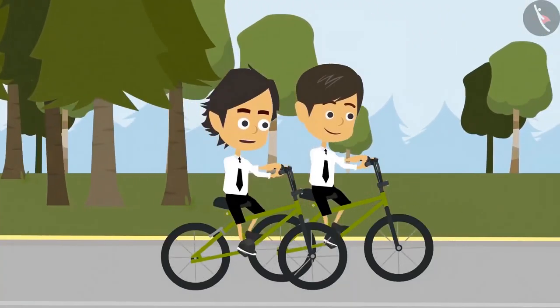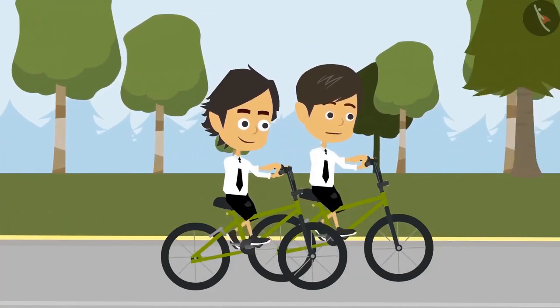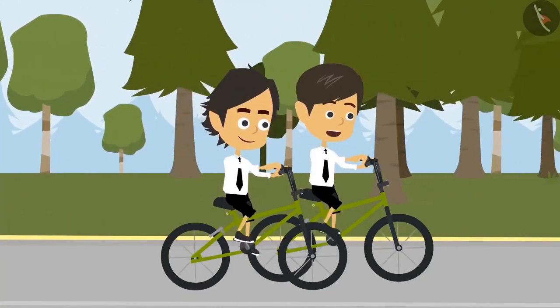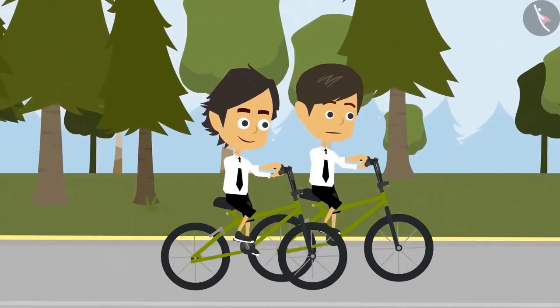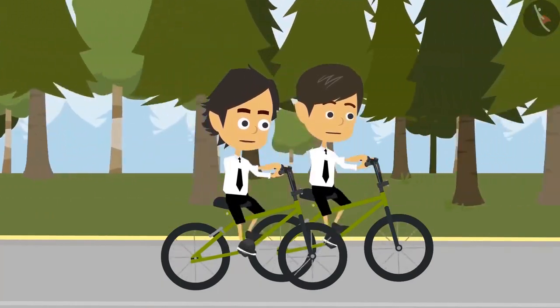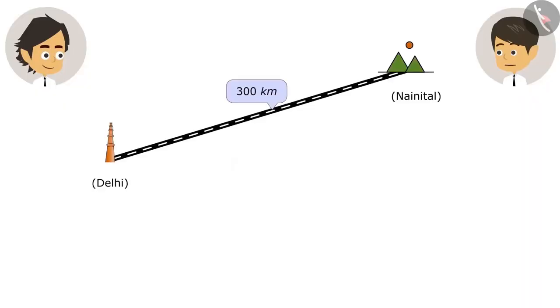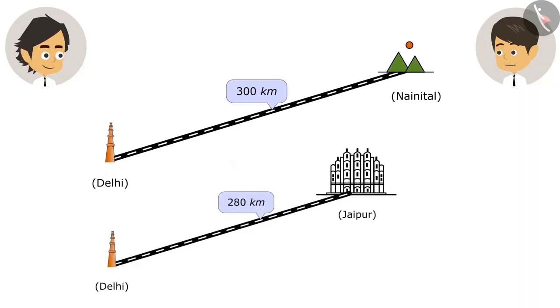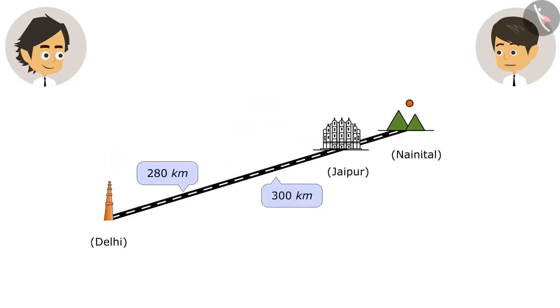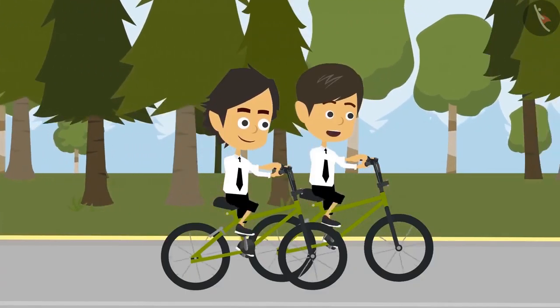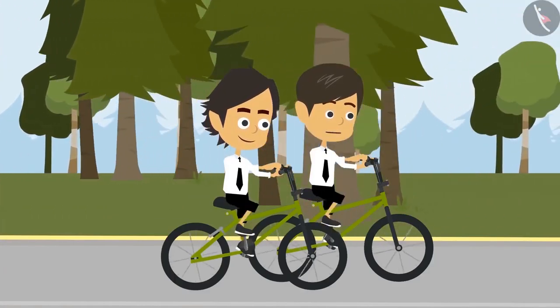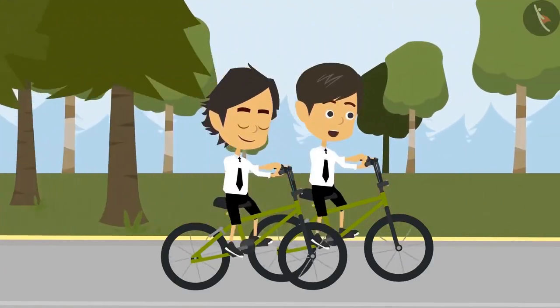I thought you would ask what a kilometer is. No, I know that kilometer is a unit of length measurement. Yesterday my papa told me. Papa told me yesterday too. If Nainital is 300 kilometers and Jaipur is 280 kilometers away, then the distance between Jaipur and Nainital is only 20 kilometers. That means we can also visit Jaipur while going to Nainital.